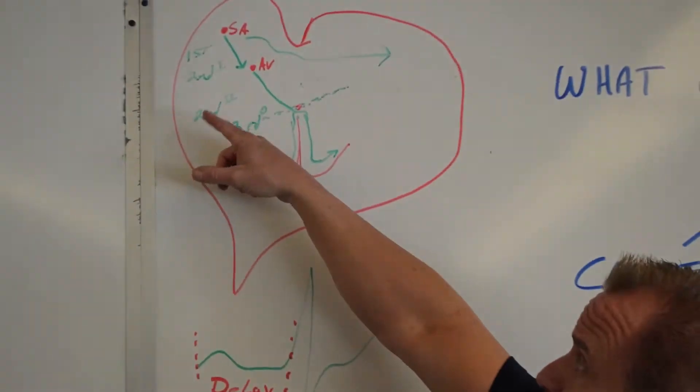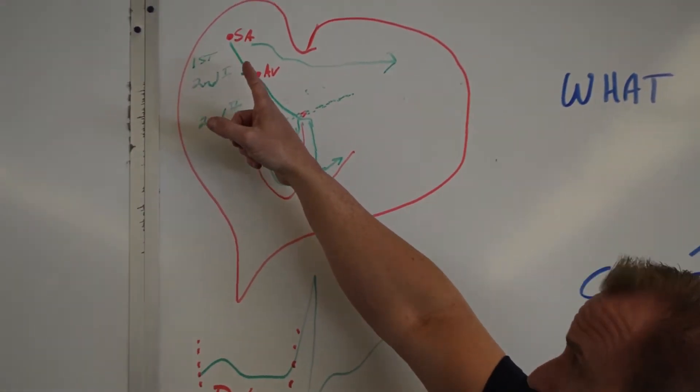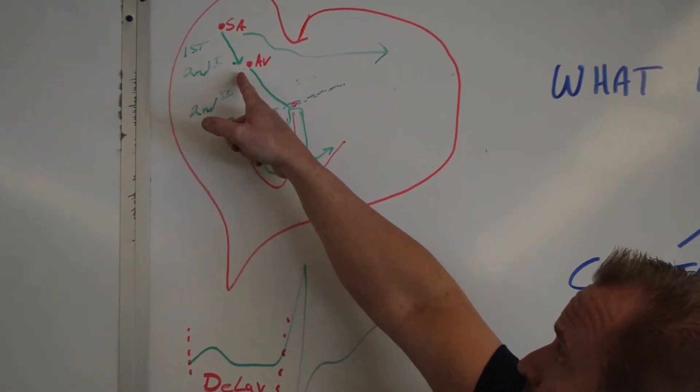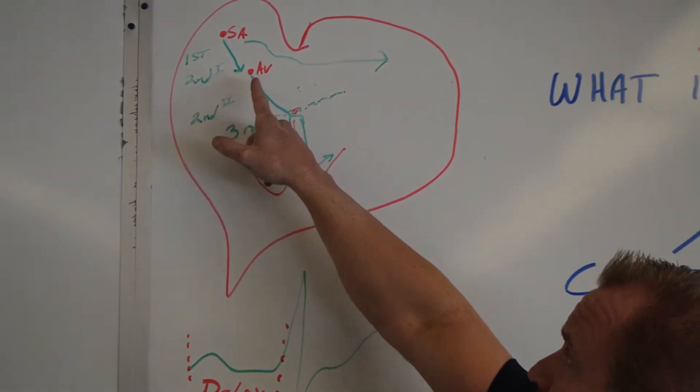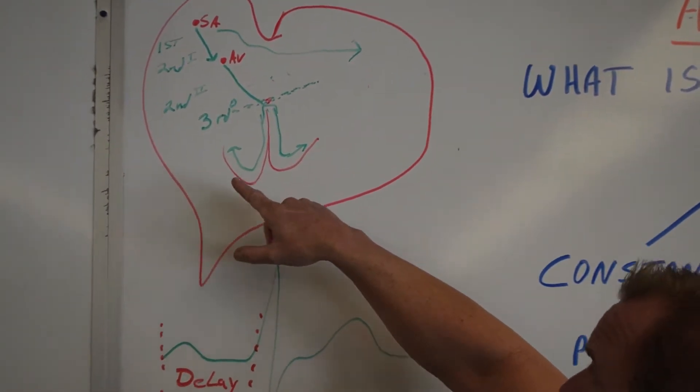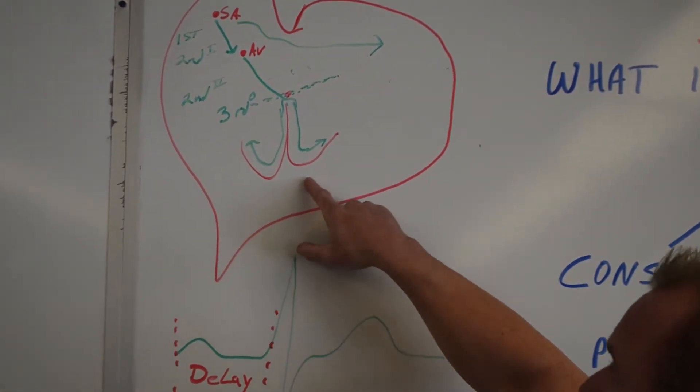Starting over here, first, just to recap, we have our SA node, our primary pacemaker of the heart, 60 to 100 beats a minute. Then it's followed by our AV node, 40 to 60 times a minute, and then eventually our ventricular response, which is about 20 to 40 times a minute.